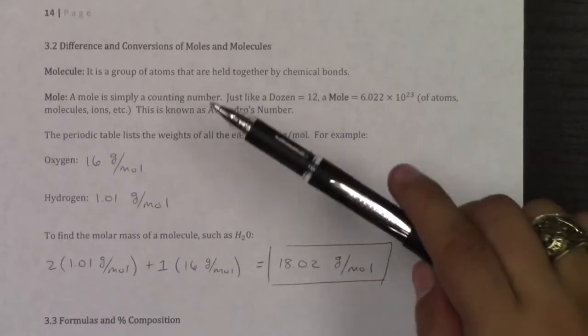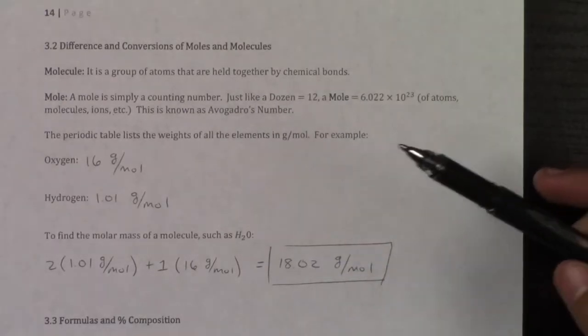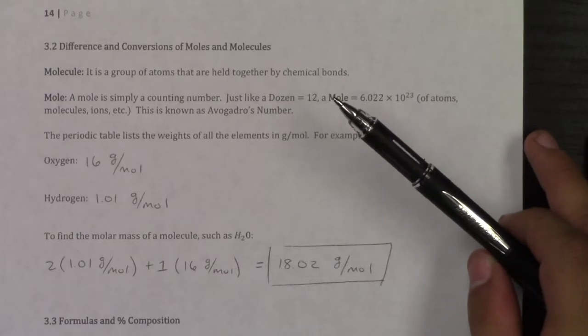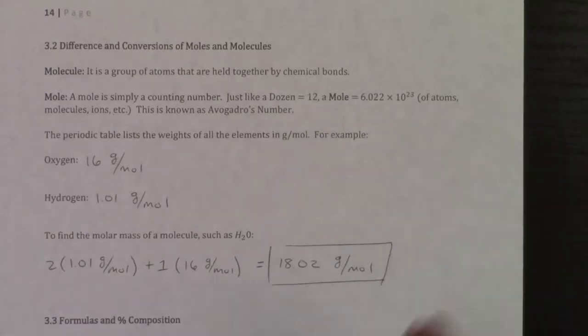Molecules are what we just did in the previous videos, just a group of atoms held together like H2O or like the caffeine or the ethanol or whatever we used previously. A mole is a counting number.